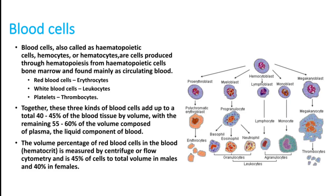Around 40 to 45 percent of the blood tissue volume is these blood cells, and the remaining 55 to 60 percent is plasma. The volume percentage of blood cells — hematocytes — is measured by centrifuge or flow cytometry and is 45 percent in males and 40 percent in females.